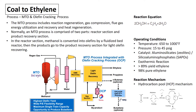The final reaction in coal to ethylene conversion is the MTO process, which is the methanol to olefin process. The MTO process includes reaction regeneration, gas compression, flue gas, energy utilization and recovery, and heat regeneration. Normally an MTO process is composed of two parts: the reactor section and the product recovery section.